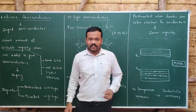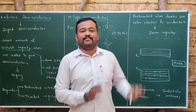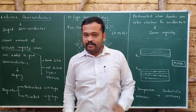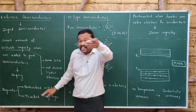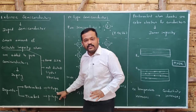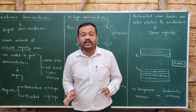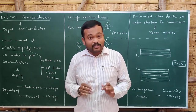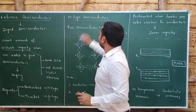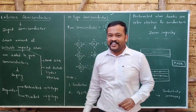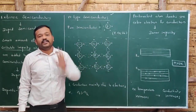Dopants are of two types: pentavalent and trivalent. Silicon and germanium are tetravalent, so we take one with five valence electrons (pentavalent) and one with three (trivalent). If you add pentavalent impurities, it becomes an N-type semiconductor. If you add trivalent impurities, it becomes a P-type semiconductor. The classification of extrinsic semiconductors depends on which type of impurities you add. Let us start with N-type semiconductors, which are formed by adding pentavalent impurities.